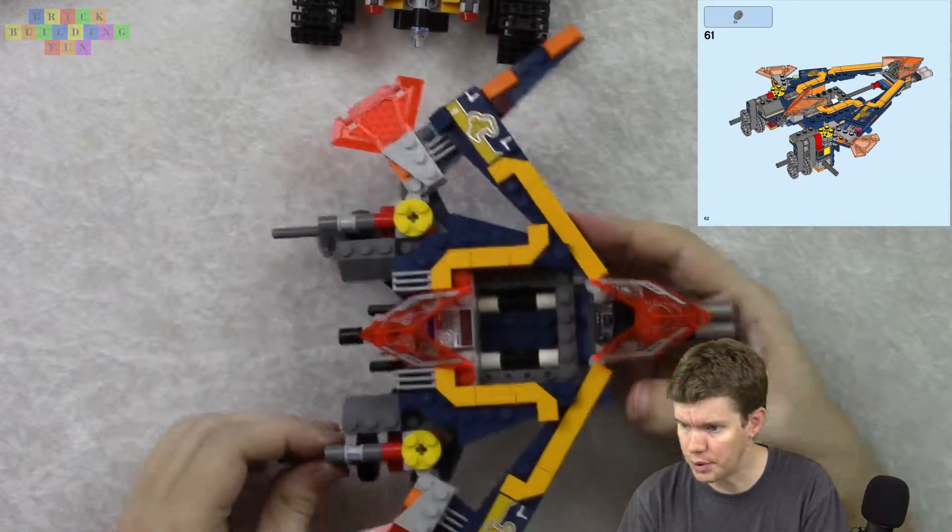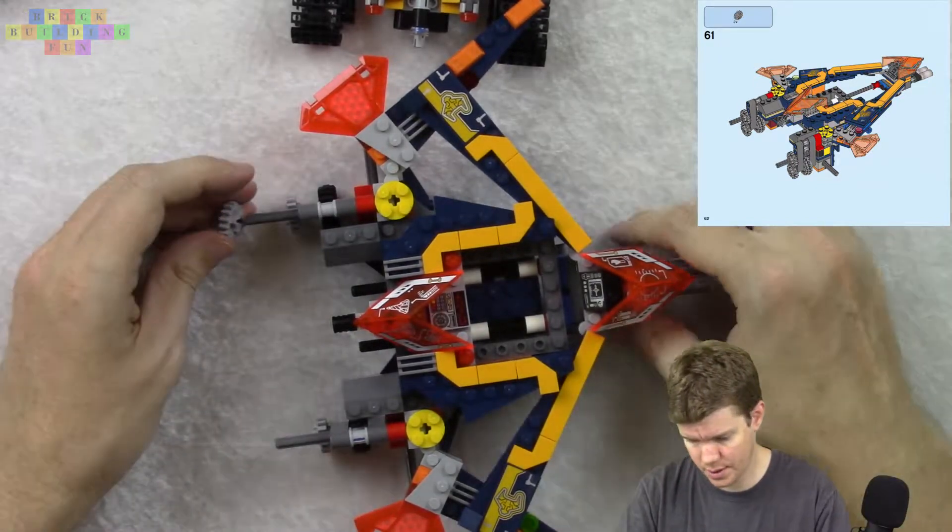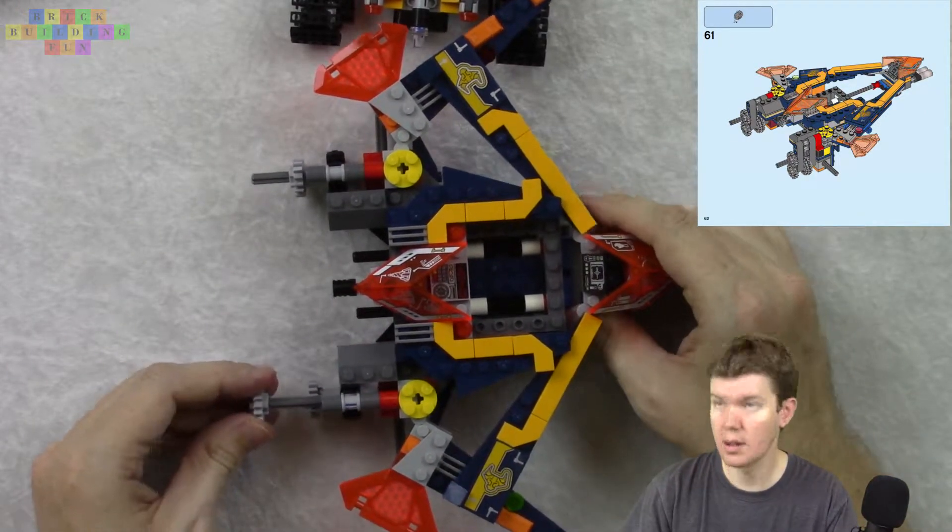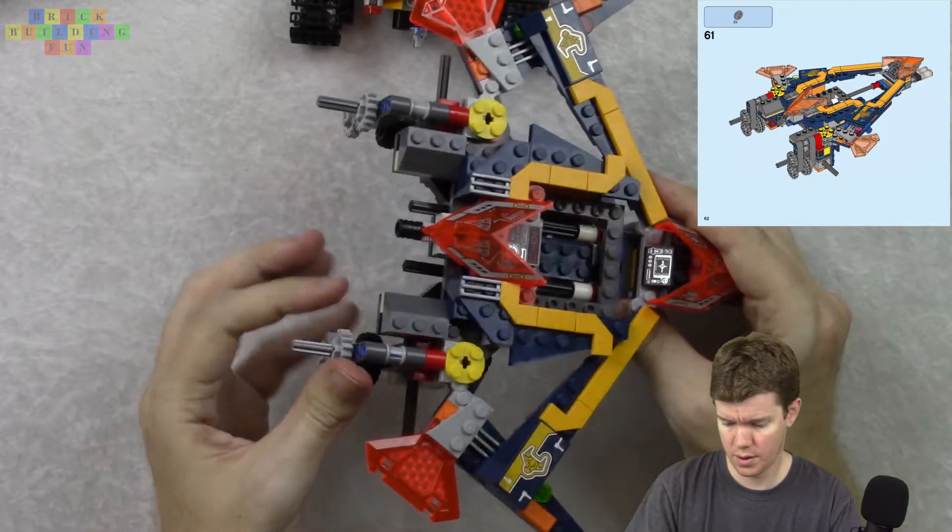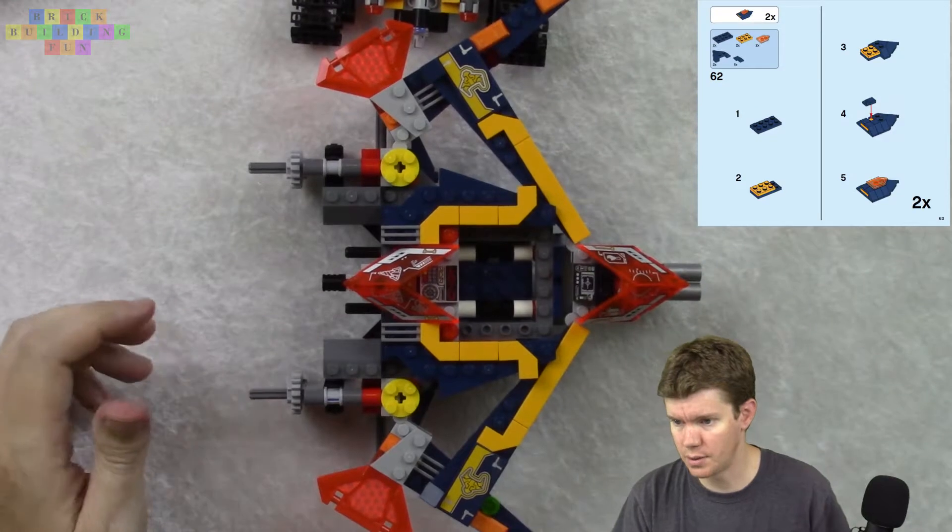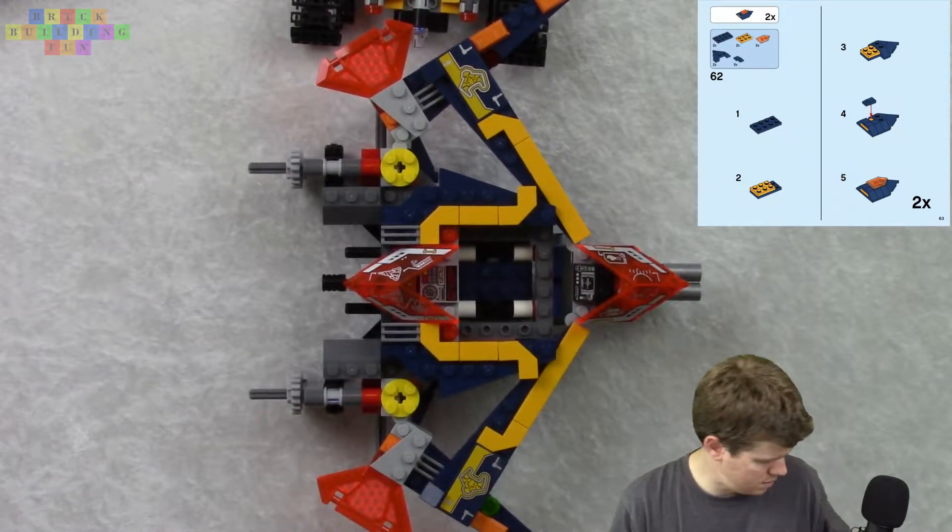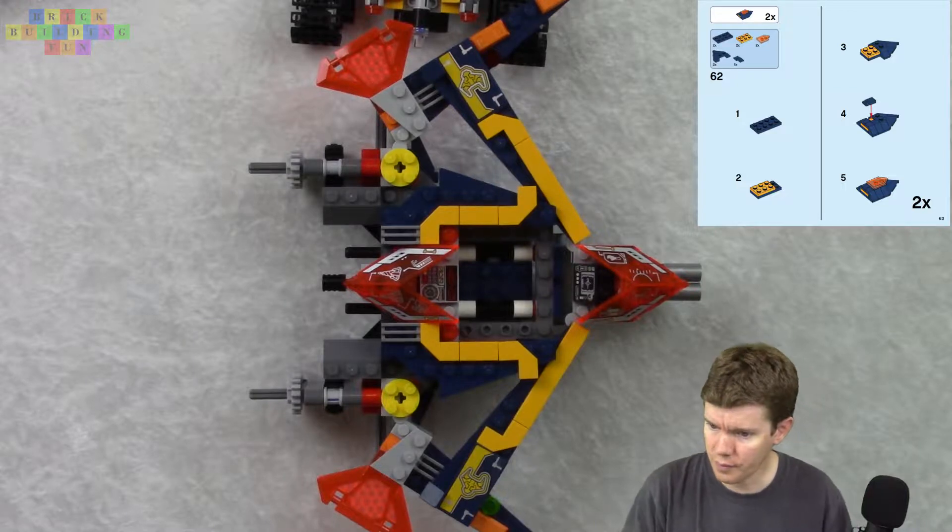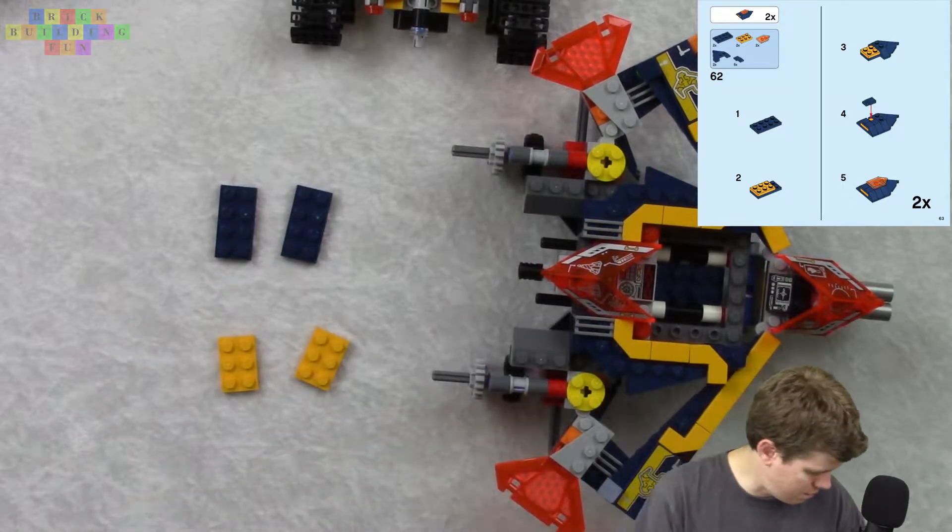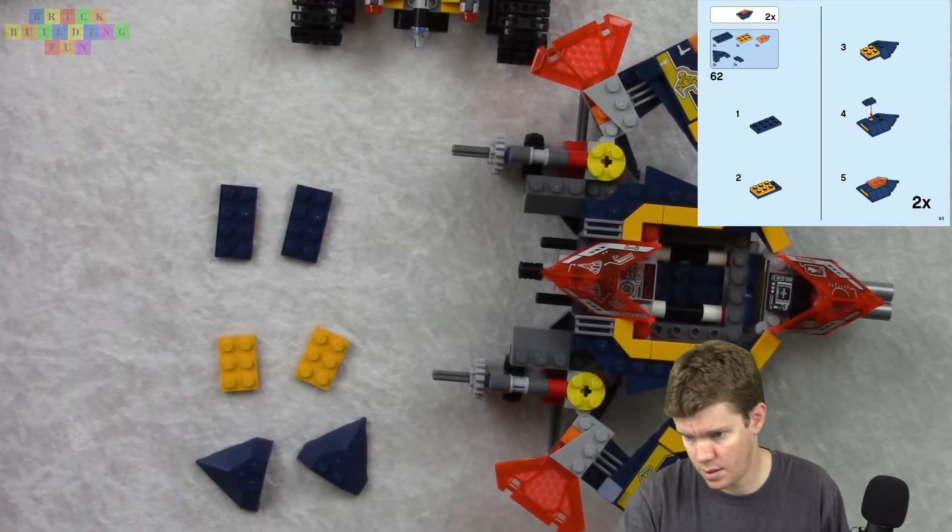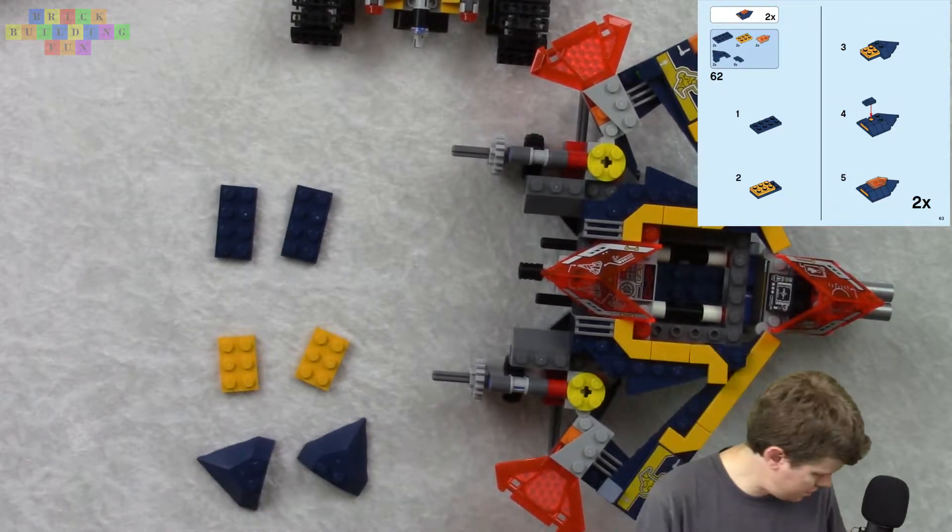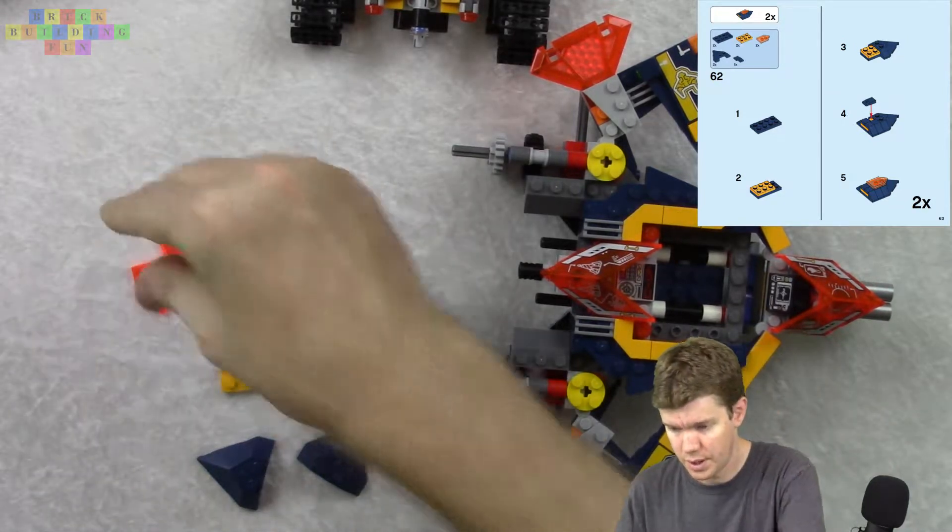And then we put two more gray things. Here. And here. That's interesting. Wonder what that's going to do. Okay. Now we do two of something. So they are giving us the parts list for both. That's very nice of them.